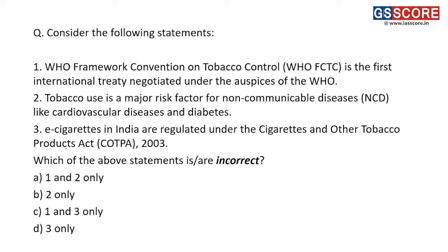Next question: consider the following statements. First, the WHO Framework Convention on Tobacco Control (FCTC) is the first international treaty negotiated under the auspices of the WHO. This is a correct statement — the FCTC was indeed negotiated under the WHO.